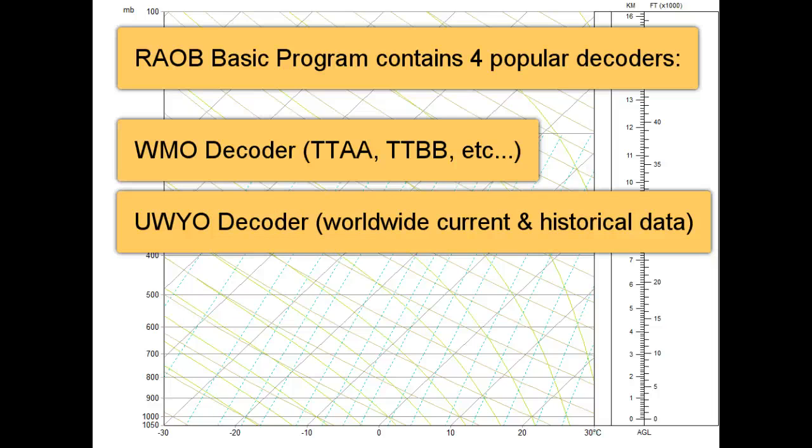Second is the UWYO decoder, for soundings produced by the University of Wyoming's Department of Atmospheric Science.